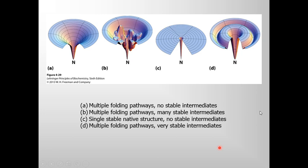Here is another example. The thermodynamics of protein folding can also be depicted as free energy funnels in three dimensions. As a protein folds, the conformational space that can be explored by the structure is constrained. This is modeled as a three-dimensional thermodynamic funnel. In this model, delta G is represented by the depth of the funnel, and the native structure is N. This is very similar to the previous diagram — the only difference is that the previous diagram was in two dimensions and this is in three dimensions.